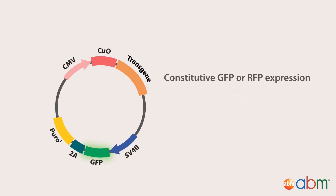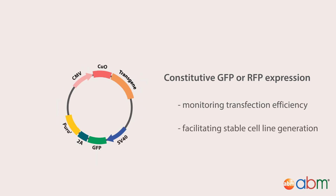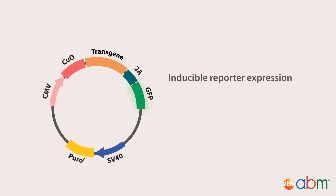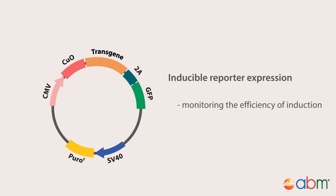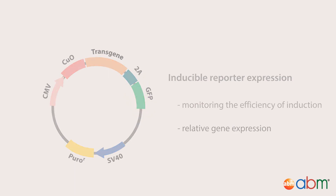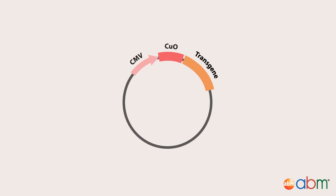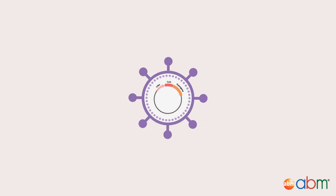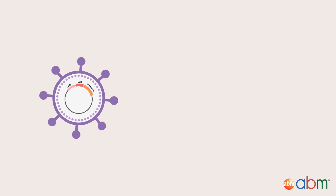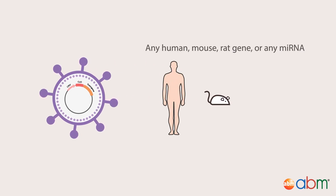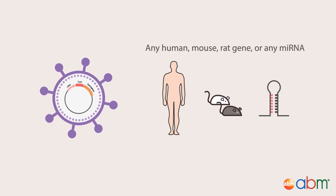Our cumate-inducible cloning vectors are available with or without constitutive or inducible reporter gene expression. Constitutive GFP or RFP expression that is not controlled by cumate may be useful for monitoring transfection efficiency and facilitating stable cell line generation. Inducible reporter expression is useful for monitoring the efficiency of induction and relative gene expression. We also offer pre-made cumate-inducible lentiviral vectors and viruses for expression of any human, mouse, or rat gene, or any miRNA from our extensive clone collection.